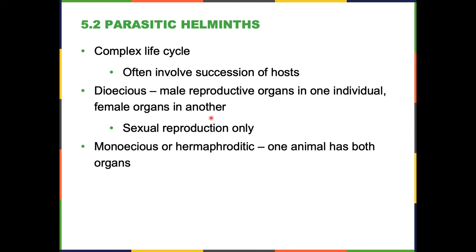Sometimes helminths use each host for different types of reproduction. The type of reproduction depends on the organism. Dioecious means they have male reproductive organs in one organism and female in another — these species use sexual reproduction only. Monoecious or hermaphroditic worms have both organs, so they can actually do asexual reproduction in the event that a suitable partner doesn't exist.